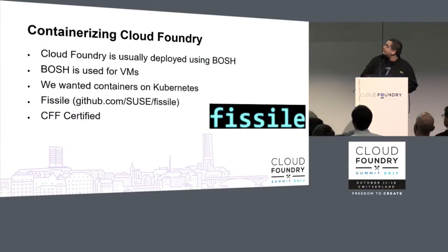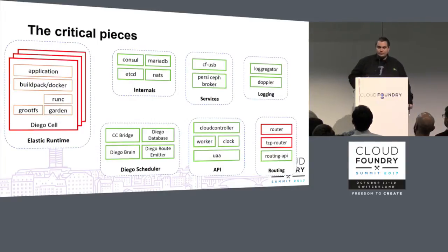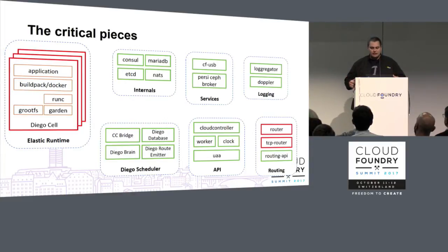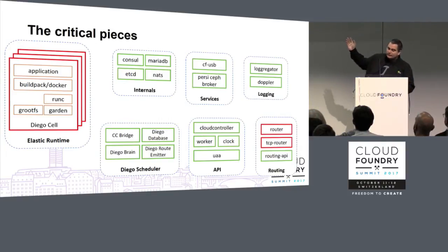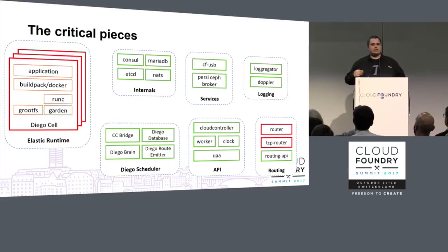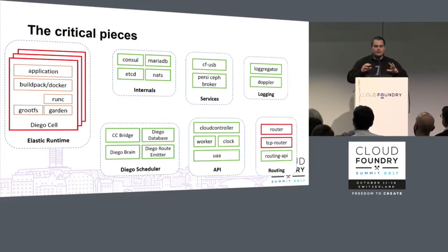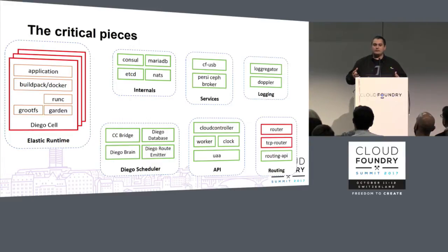You'll notice that some boxes have turned red. It's useful to think about the critical pieces of the system that you want to be highly available more than anything else. In this case, you can see that the elastic runtime is red and routing is red as well. Basically these are the things that run your applications and also route traffic to them, and this is very important.